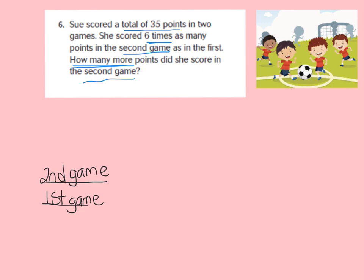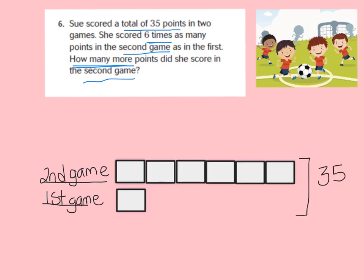I've started the model for you. We have the second game and the first game. I would like you to see if you can fill in the boxes for the model and the bracket on the side on your own. Here's what I have for my model — check yours, and if you need to fix anything, go ahead and fix it now. We have 6 boxes because we have 6 times as many points in the second game as the first game, and the total of 35 points goes next to the bracket around all the squares.